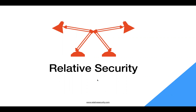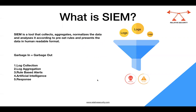SIEM came first before XDR or SOAR. SIEM is a tool that collects, aggregates, normalizes, and analyzes data according to preset rules, and presents the data in a human-readable format. The rule of SIEM is: if you put in garbage, it is going to give you garbage — because if you're not giving it enough credible data, it cannot analyze and give you anything useful.